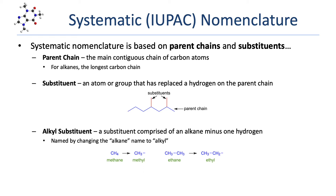The CH3 groups branching off a molecule are called alkyl substituents. An alkyl substituent is a group comprised of an alkane minus one hydrogen, named after the alkane it came from. CH4 is methane; remove a hydrogen to make CH3 — it becomes a methyl group. Ethane is a two-carbon alkane; remove one hydrogen to get CH3 CH2 — that's an ethyl group.